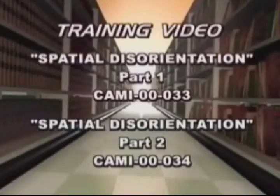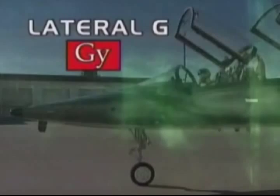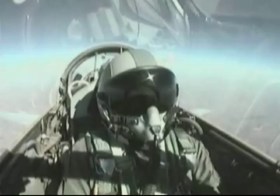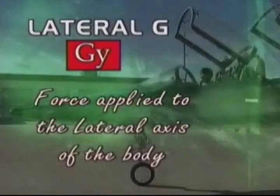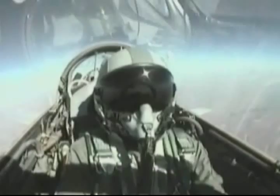Transverse G accelerations affect the body's equilibrium system. Equilibrium originates from the inner ear, causing pitch-up and pitch-down illusions, which are discussed in detail in the training module on spatial disorientation. A second type of G-force is lateral, or GY, where the force is applied to the lateral axis of the body. Lateral Gs occur when a pilot is exposed to acceleration from side to side—during a vertical roll, a rudder roll, an aileron roll, or an uncontrolled flat spin.